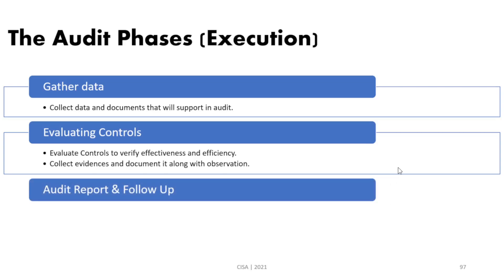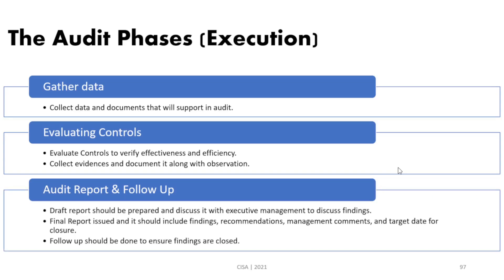After that we perform the audit report and follow-up. In the audit report, we first prepare a draft report. The draft report should be discussed with executive management, and after agreeing on all points, we conclude it in the final report. The final report should be communicated to the audit committee of the board of directors. After finalizing the audit, we do a follow-up check to ensure that reported findings are closed.